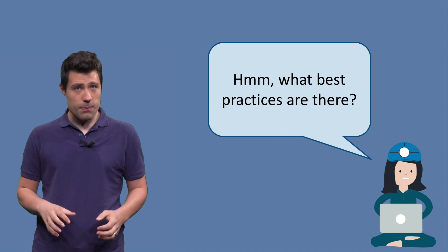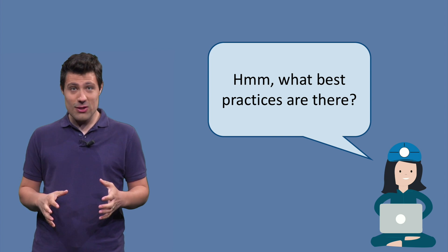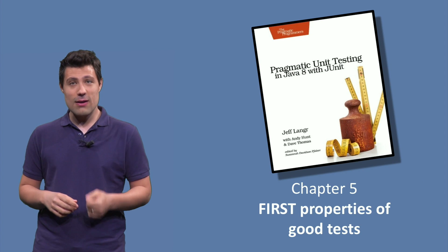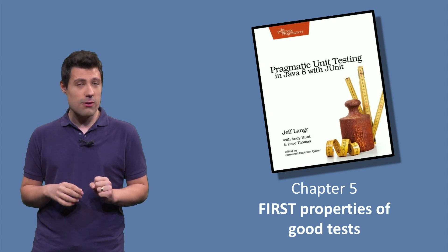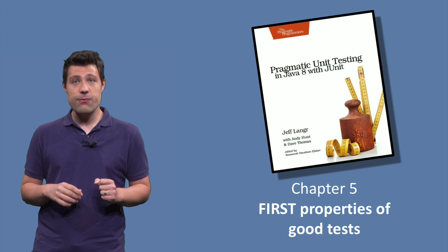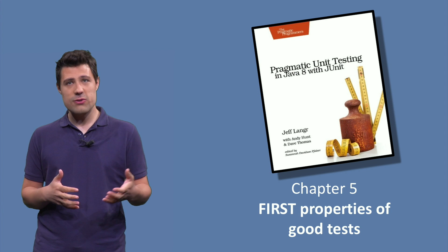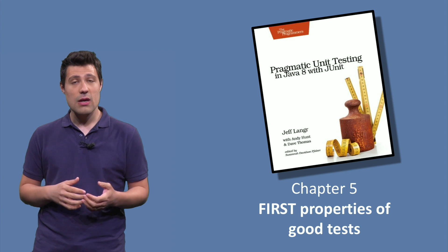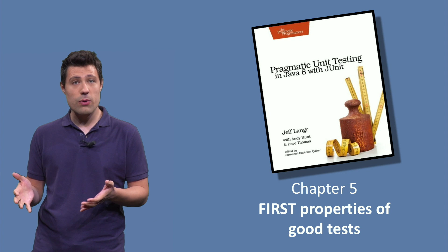Before starting to talk about bad practices, let's discuss some best practices. What I'm going to tell here is based on chapter 5 of the Pragmatic Unit Testing book. The chapter is called FIRST Properties of Good Tests, and it is FIRST because F-I-R-S-T — each letter means something, and that's what we're going to explore now.